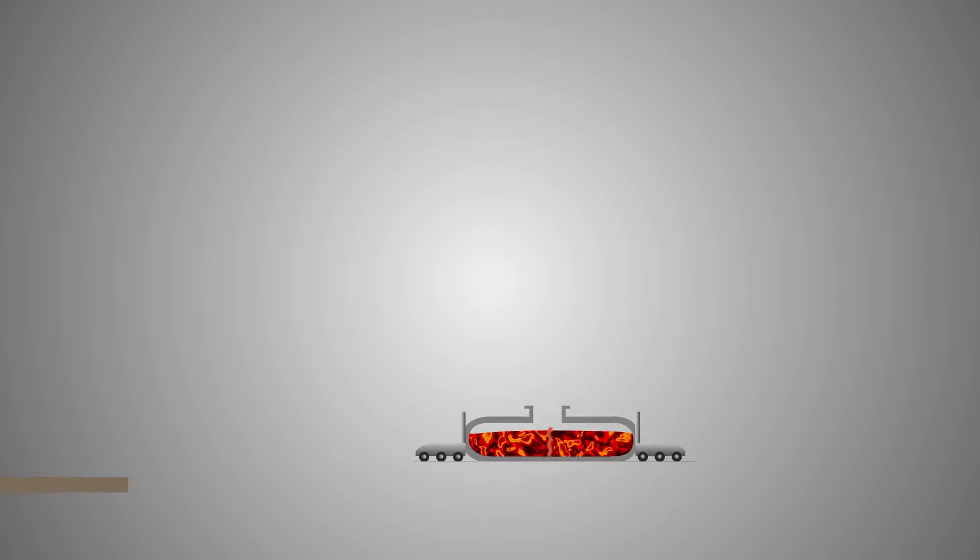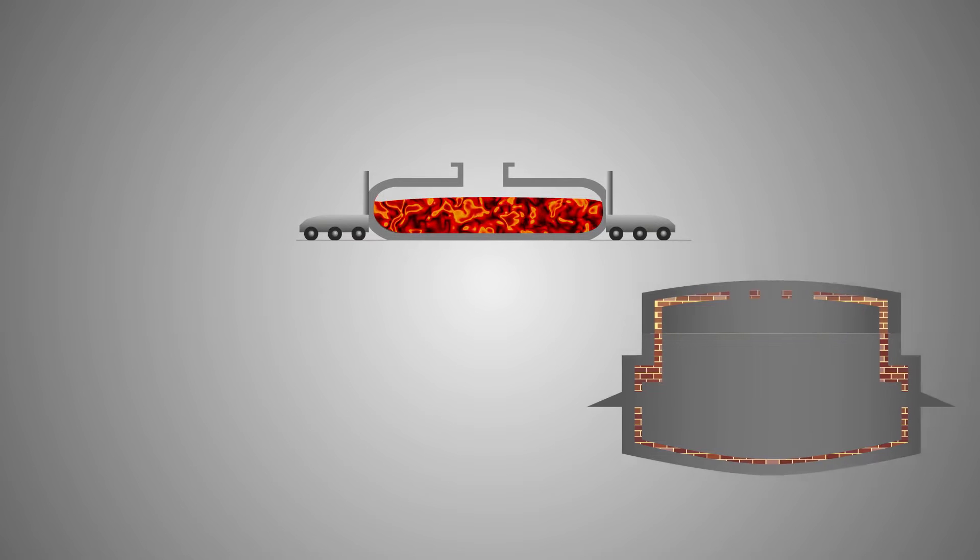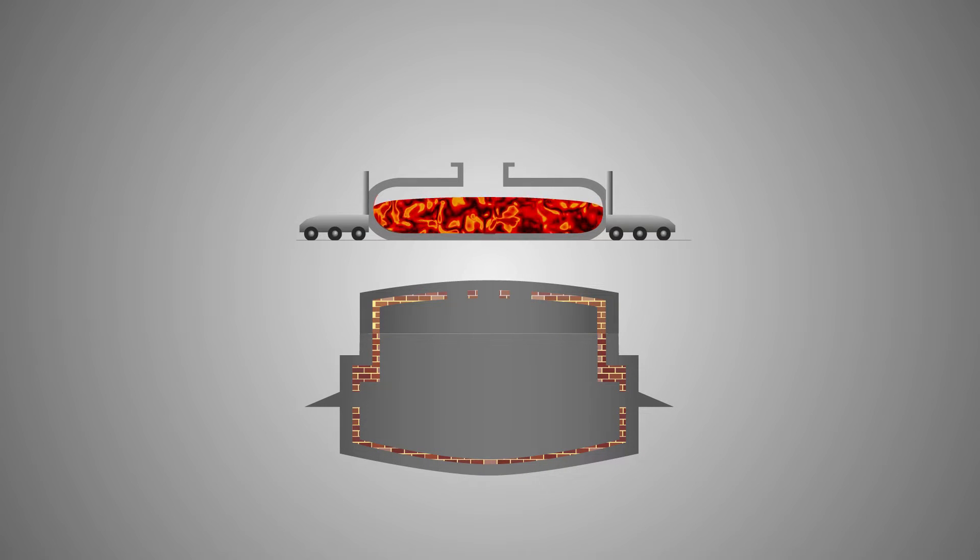Molten iron is transported from the blast furnace to the steel plant via torpedo cars. At the steel plant, the molten iron is transferred from the torpedo car to a ladle.